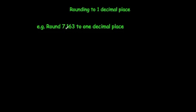Round 7.163 to one decimal place. This number has three decimal places. You still look at the second decimal place — it's a 6 — so we round up because it's 5 and above. That means it's going to be 7.2. You can ignore everything else; you just need to look at the second decimal place to decide whether to round up or down.